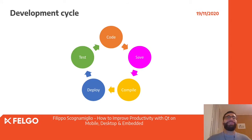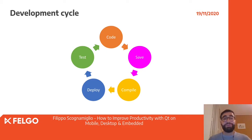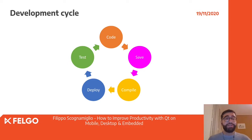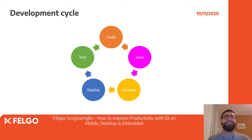Let's start by defining how the development cycle generally works. You generally write some code, save your source files, which then get compiled into an executable. The executable is then deployed onto devices, and then you test the results of your development. This cycle keeps going on and on until your application is complete and ready for your customers.